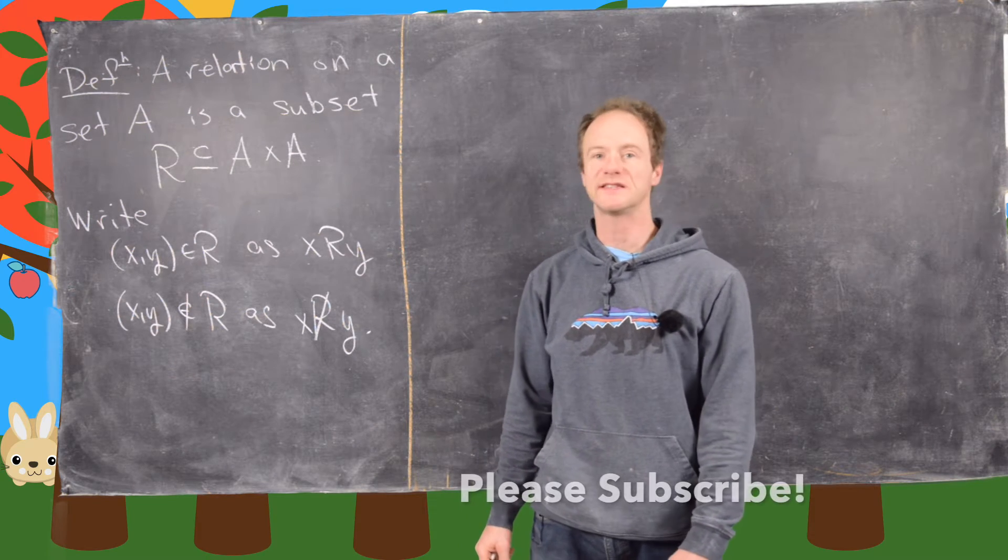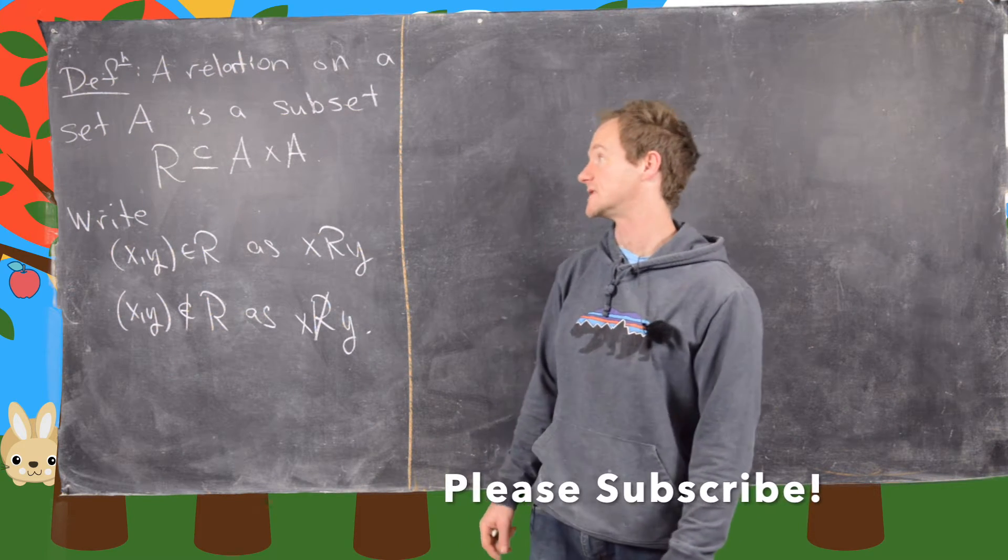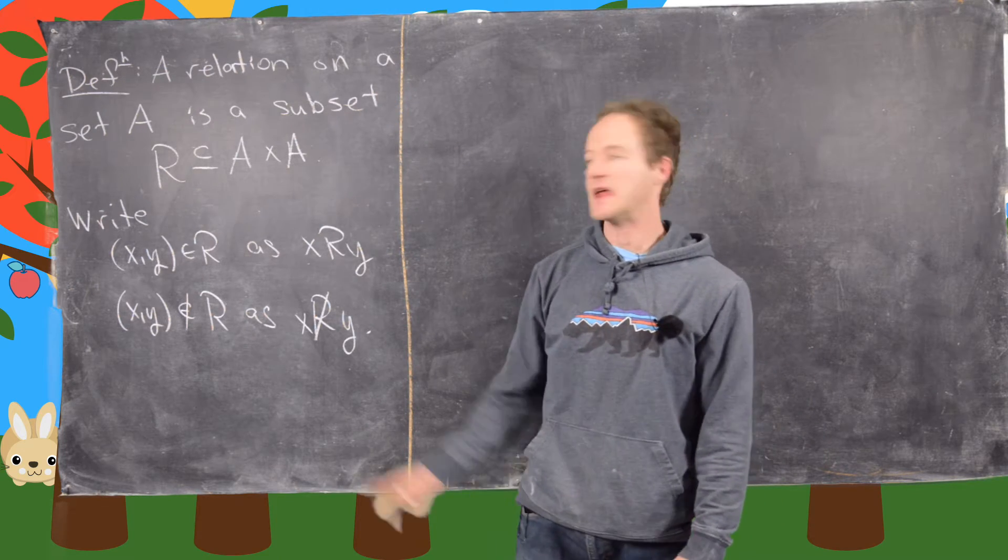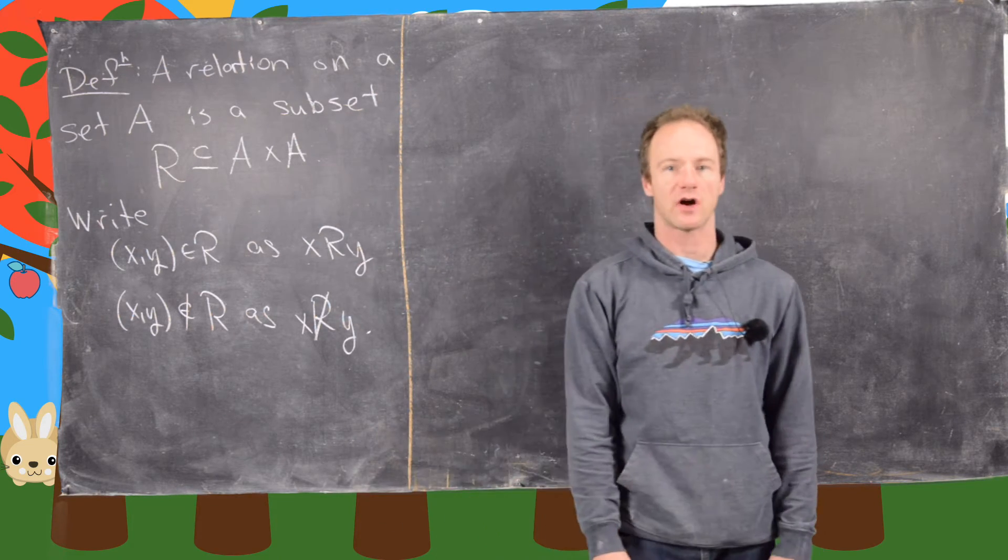In this video we want to look at the precise definition of a relation on a set. So we say that a relation on a set A is just a subset of A cross A.